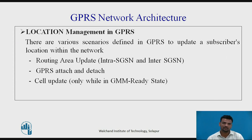Location management in GPRS: there are various scenarios defined in GPRS to update a subscriber's location within the network. The first method is routing area update, covering intra-SGSN and inter-SGSN scenarios. GPRS attach and detach: when a user wants to access GPRS, they must initiate the GPRS attach procedure, and when disconnecting, they must initiate the detach procedure. Cell update occurs only during the GPRS Mobility Management ready state.